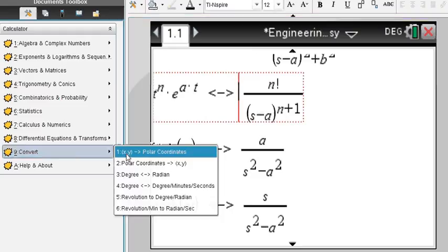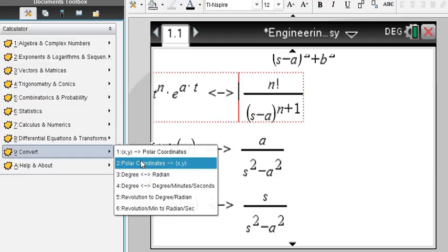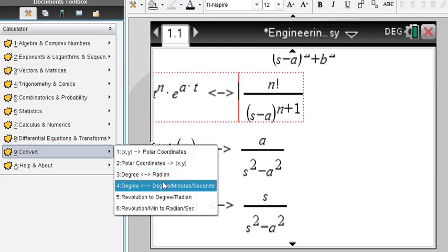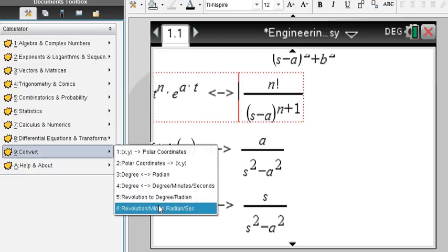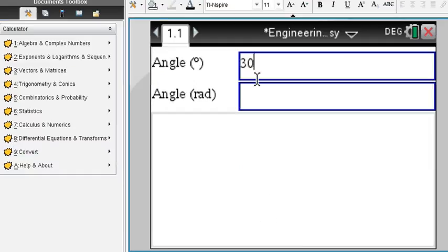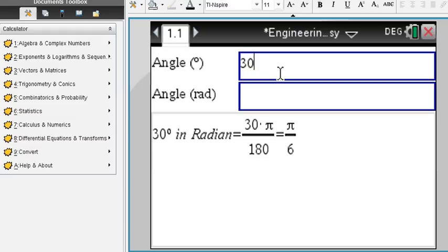And then finally the conversions, convert rectangular to polar coordinates and back, degree radian, degree to degree minutes and seconds, revolutions to degrees and radian. Okay, so very simple, degree radian. If you enter your degrees, you get your radian here, and vice versa.